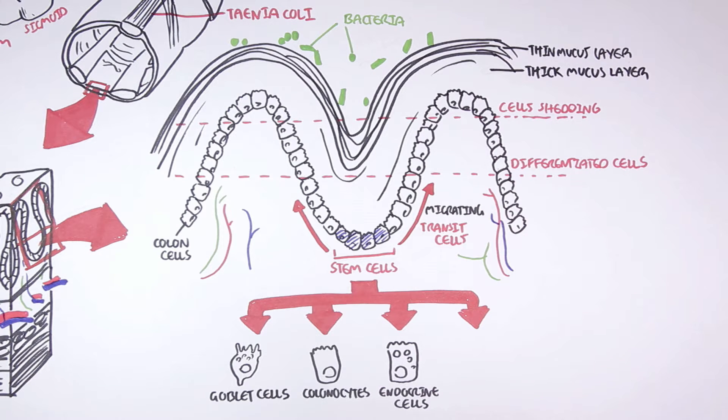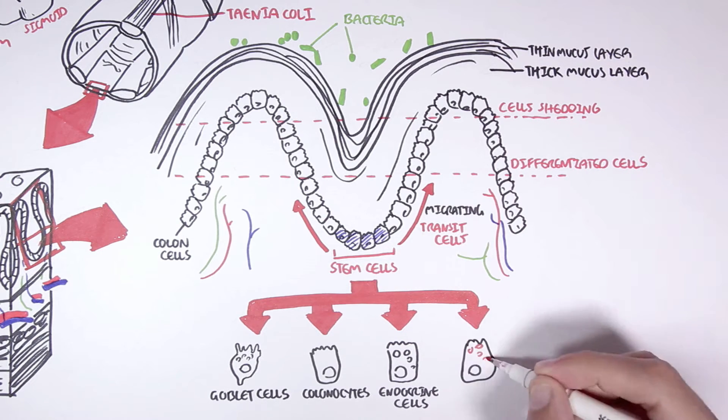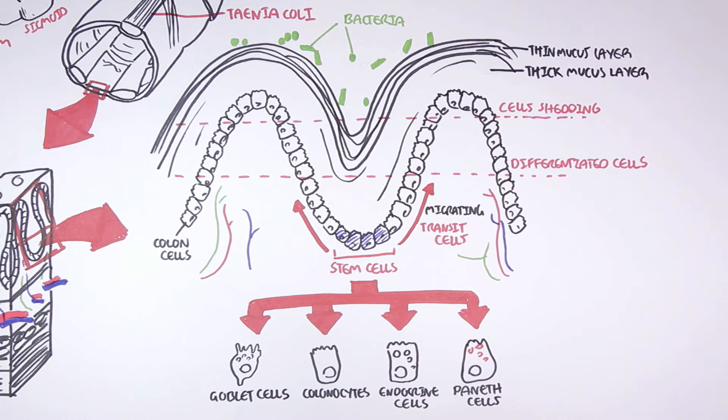In the colon there can also be paneth cells that arise from stem cells during development. However, these paneth cells are confined in the small intestine after some time.